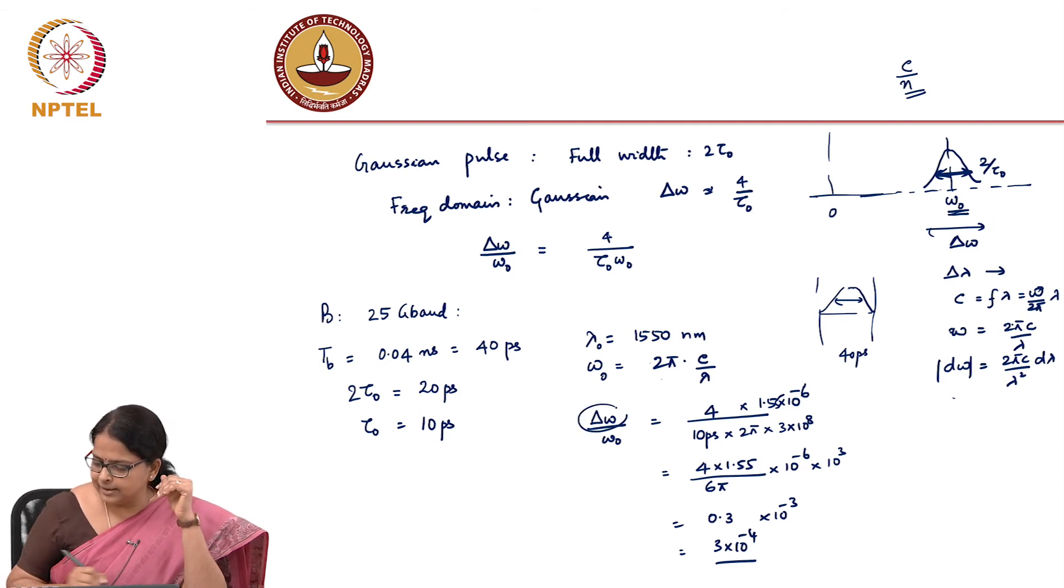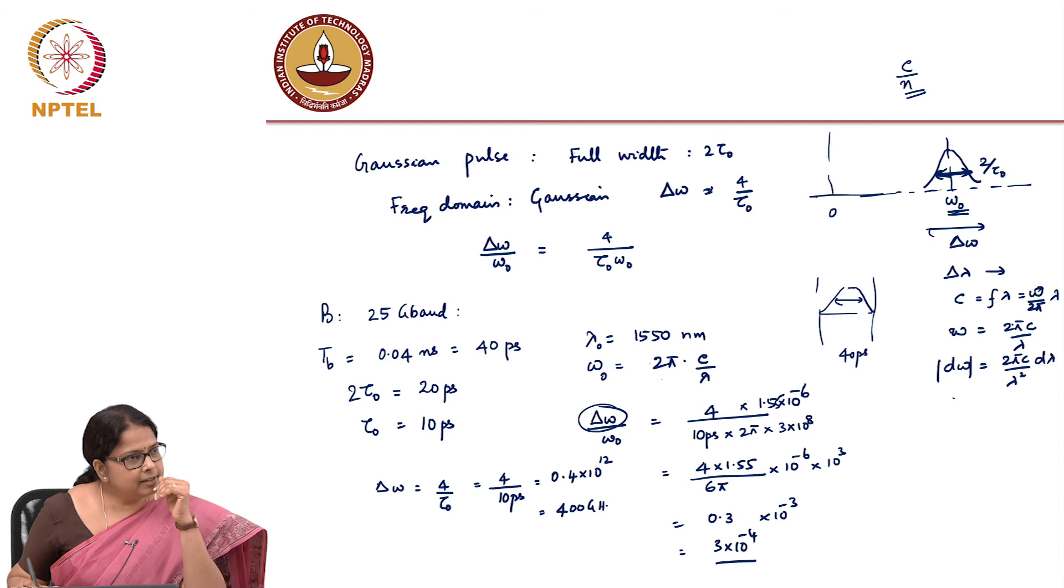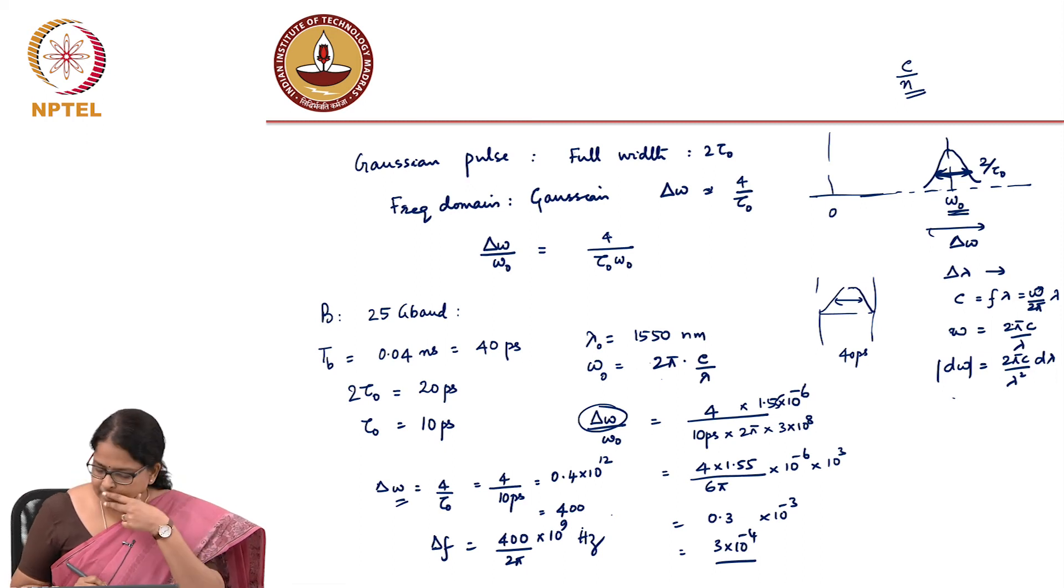So, you had a delta omega here, which is 4 by tau naught, and so that is 4 divided by 10 picoseconds, which is 0.4 into 10 power 12, which is 400 gigahertz. Well, it is not gigahertz in that sense because this is still delta omega. Delta f would be 400 into 10 power 9 divided by 2 pi. This would be in hertz. This is delta f. So, what is delta lambda? It is roughly 400 by 6. About 67 gigahertz. 67 gigahertz is roughly what in nanometer.